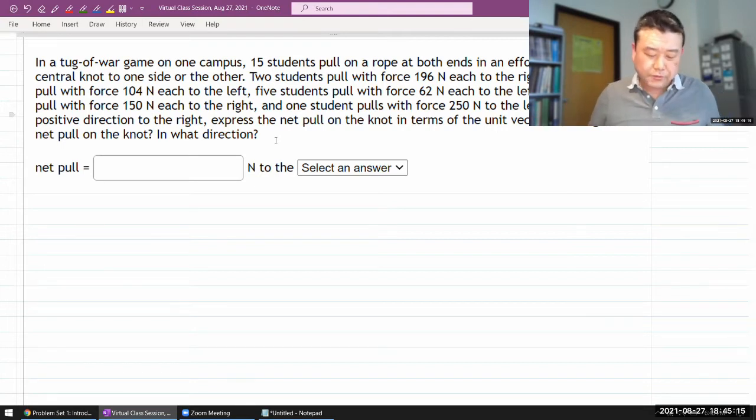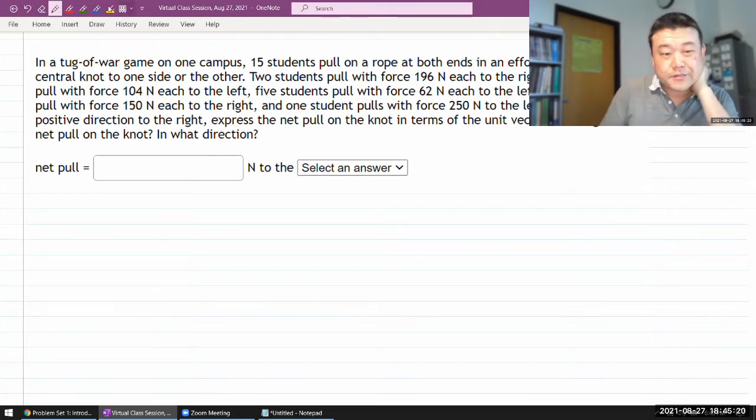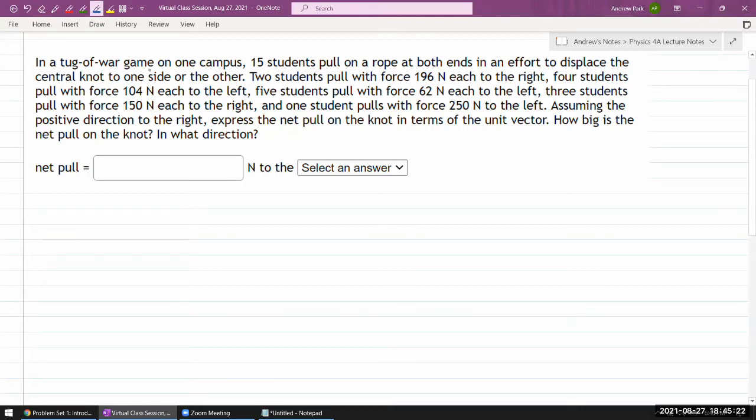And what I like to do when I'm trying to figure out physics questions is basically doodle. So it says, in a tug-of-war game on one campus, it says 15 students pull on a rope at both ends. Okay, I need a rope. Well, that's in the middle. I need a rope. It says 15 students at both ends. So I guess there might be more. At both ends, in an effort to displace the central knot, which I drawn, to one side or the other.